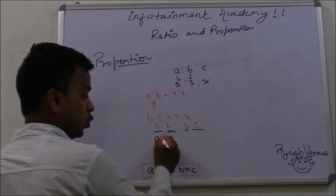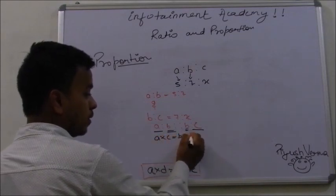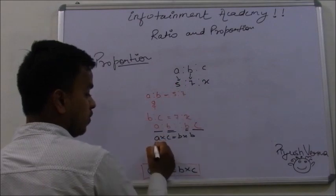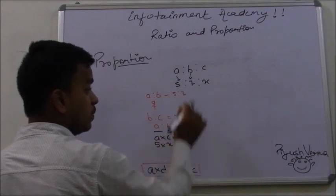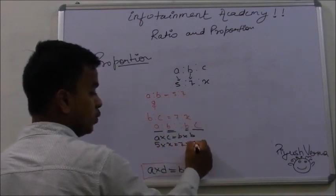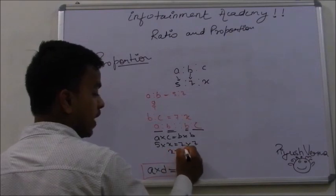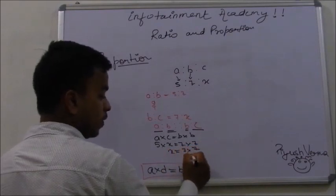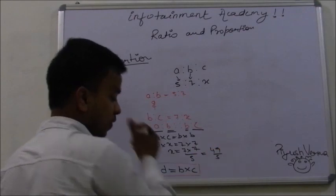Simply, product of extremes should equal product of means. The extreme positions are 5 and X, and the mean positions are 7 and 7. The value of X comes out to be 7 times 7 upon 5. It comes out to be 49 upon 5.